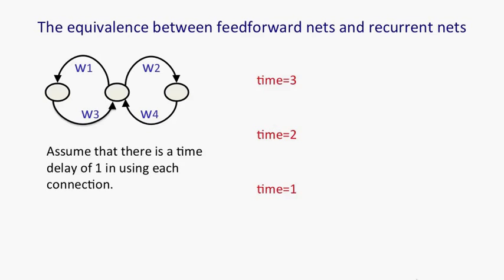The diagram shows a simple recurrent net with three interconnected neurons. We're going to assume there's a time delay of one in using each of those connections and that the network runs in discrete time. So there's a clock that has integer ticks.